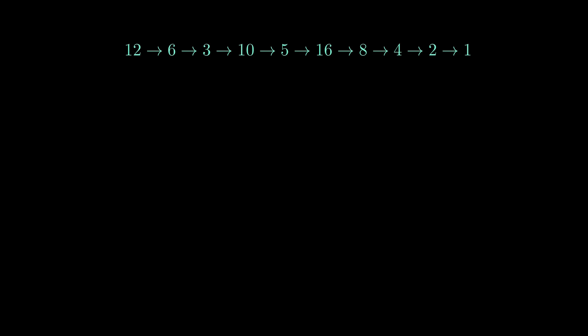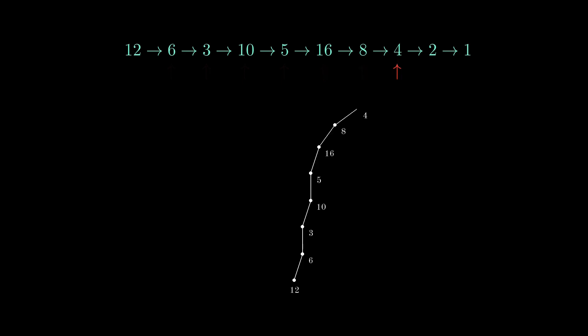If we start from the number 12, the next number is 6, which is even. If a number is even, we go towards the right by some angle; and if the number is odd, we go towards the left by some angle. So if the series begins with 12, we get this interesting curve.